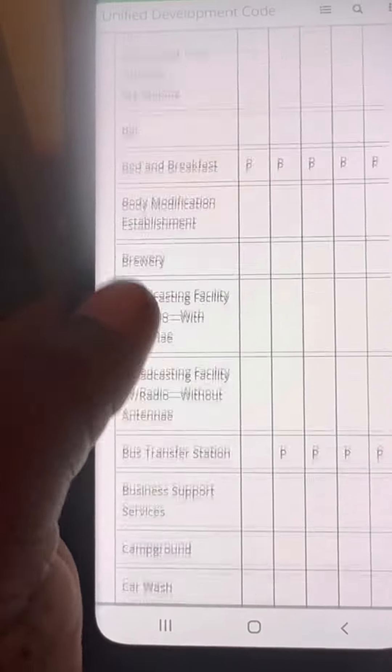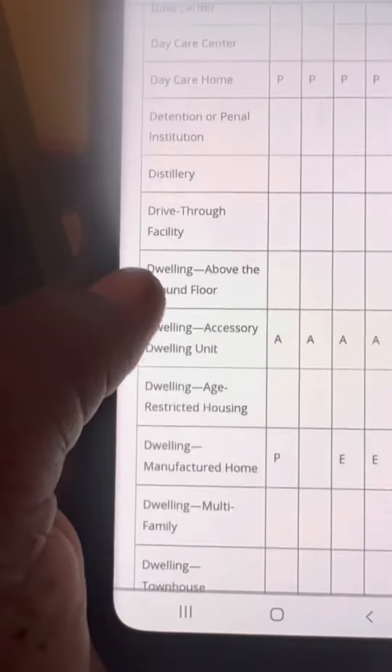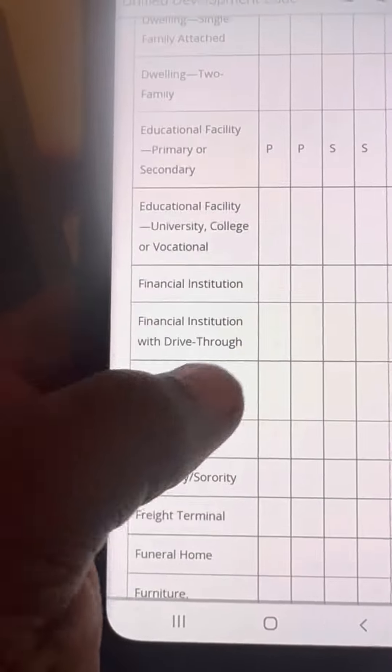If you keep scrolling down, it's gonna have every business that you could think of under there. Whatever business you want to open up, you'll see if it's gonna say permitted.